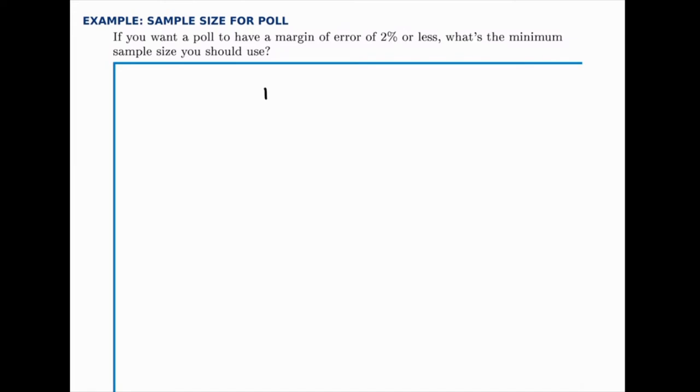Remember the margin of error looks like 1 over the square root of n as a percentage, so we can write times 100% just to indicate that we're making it a percentage. So if we want this to equal 2%, then really what we want is 1 over the square root of n to equal 0.02, or as a percentage we want it to equal 2%.